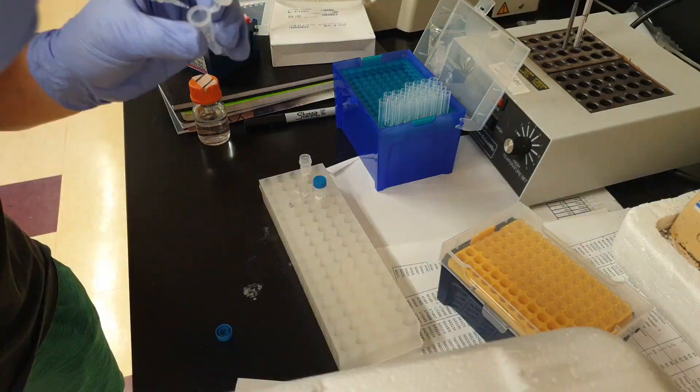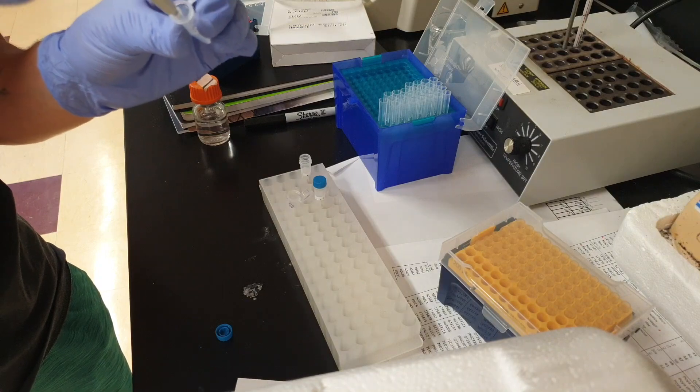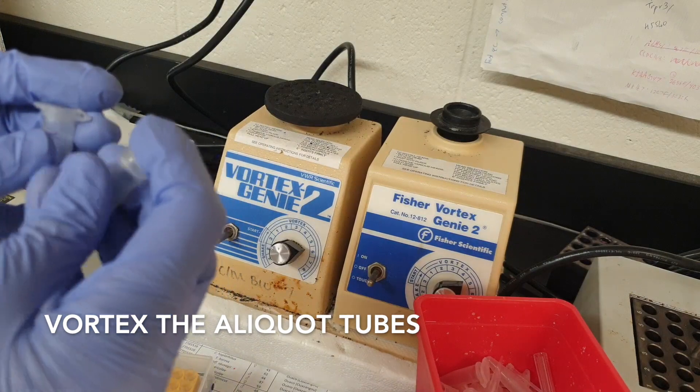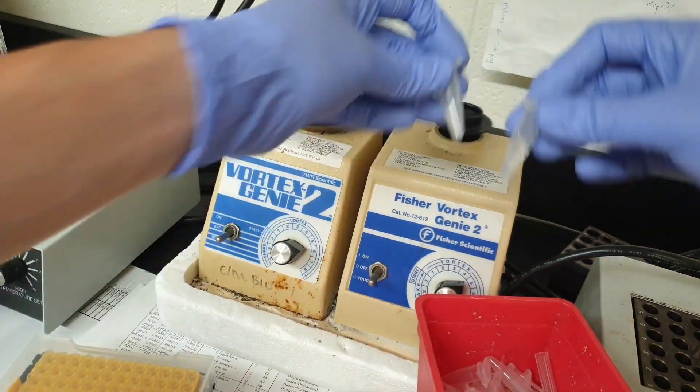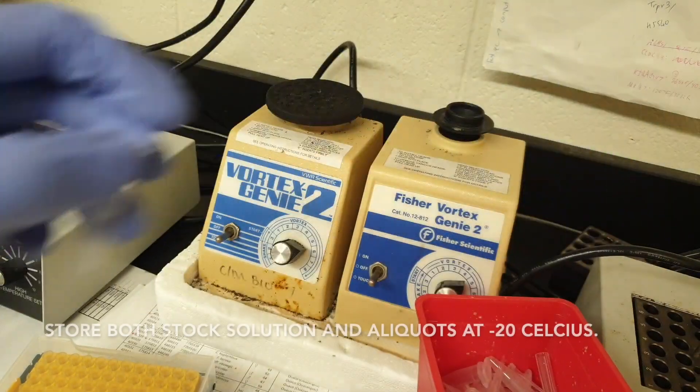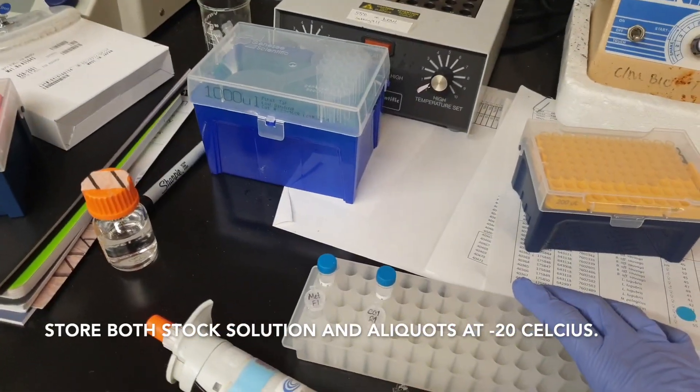That goes inside, vortex the aliquot tubes, and that's it, and put them back in the freezer.